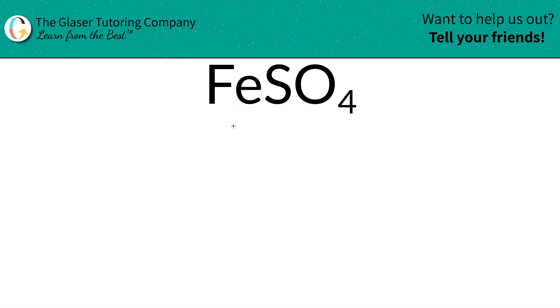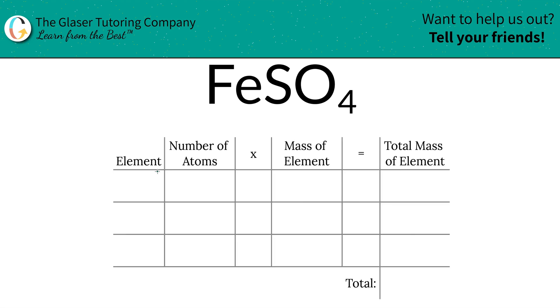What is the molar mass of iron(II) sulfate? We have a simple process to follow, and we're going to use this table to help us out. The first thing we're going to do is write down the elements in the compound: we have iron, we have sulfur, and we have oxygen.